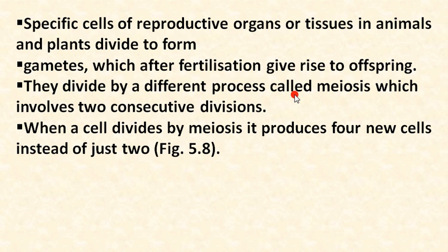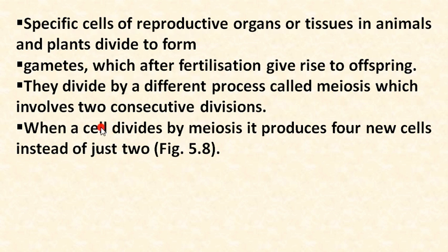Gametes divide by a different process called meiosis. The key difference between mitosis and meiosis: mitosis occurs in normal body cells for growth, while meiosis occurs only during the division of gametes. Meiosis involves two consecutive divisions — first producing two daughter cells, then each of those divides again, finally producing four new cells.